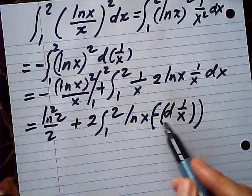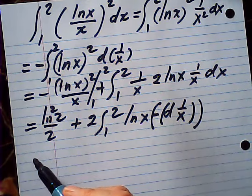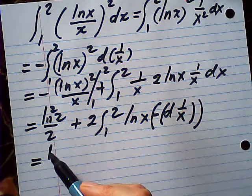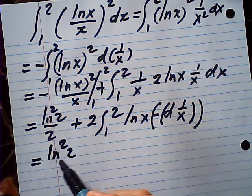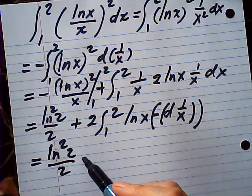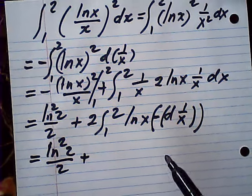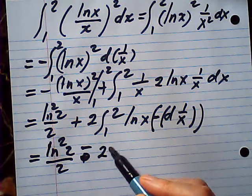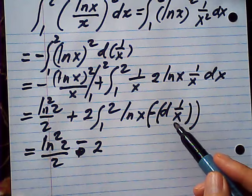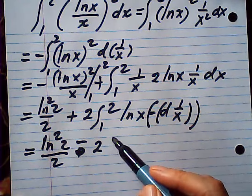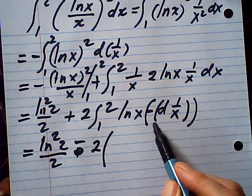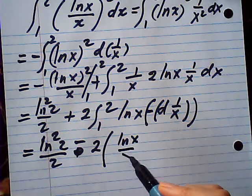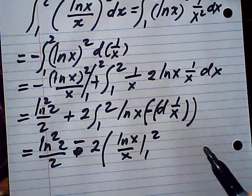Now, then we can use by parts again. This is log 2 squared over 2, plus, no, it's minus, isn't it? Minus 2, u v, u times v, log x over x from 1 to 2,